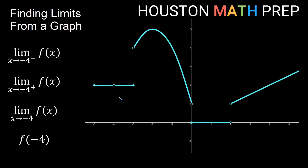Let's do a couple more examples with a new function. Focusing on x equals negative 4, you'll notice we have an open dot, so we're not defined at this point. The limit as x approaches negative 4 from the left approaches that hole, which is at y equals 2, so this limit is 2. Approaching from the positive side, we're approaching the same hole from the other direction — also at y equals 2. Since both one-sided limits are the same, the overall limit is 2.